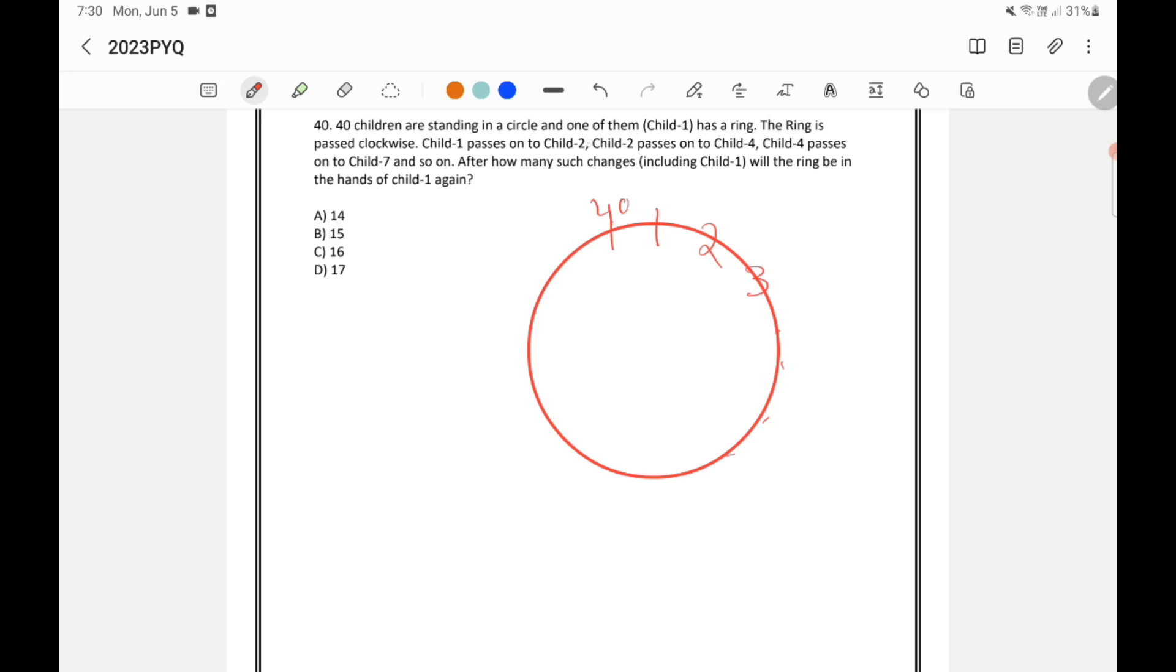Now child 1 has a ring. The ring is passed clockwise. Child 1 passes on to child 2. Child 2 passed to child 4. Then child 4 passed to 7. Here difference is 1. Here difference is 2. Here difference is 3.